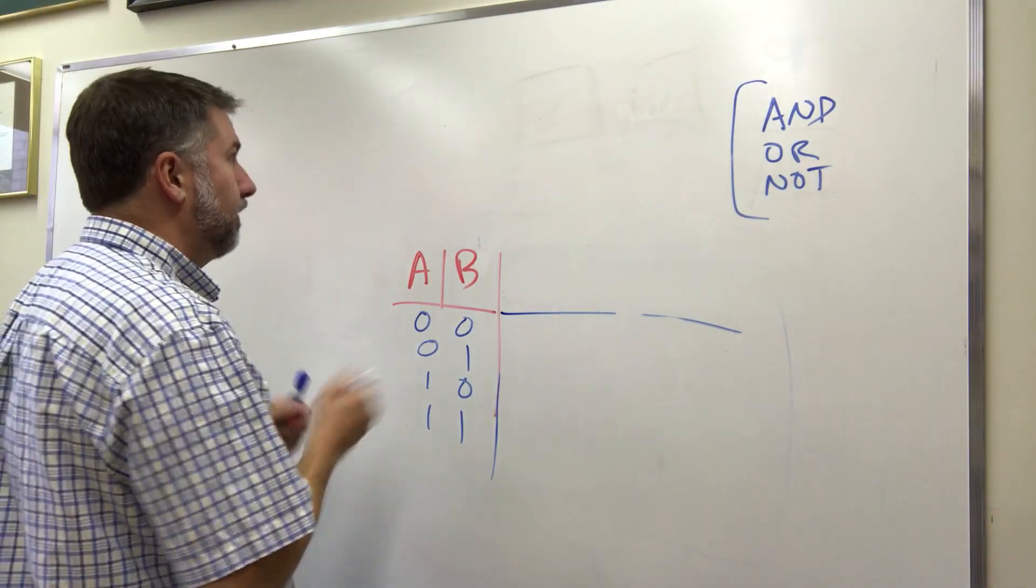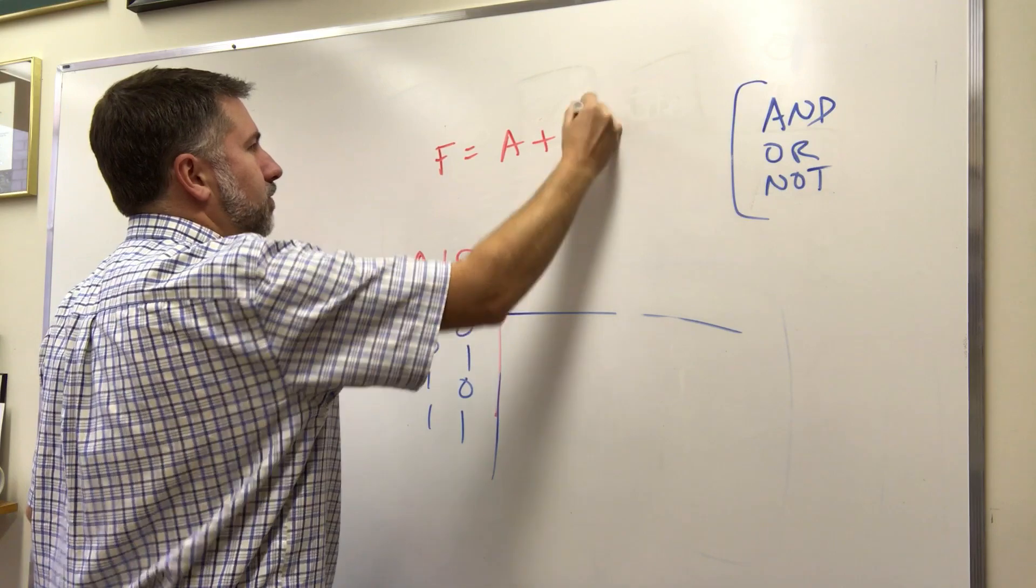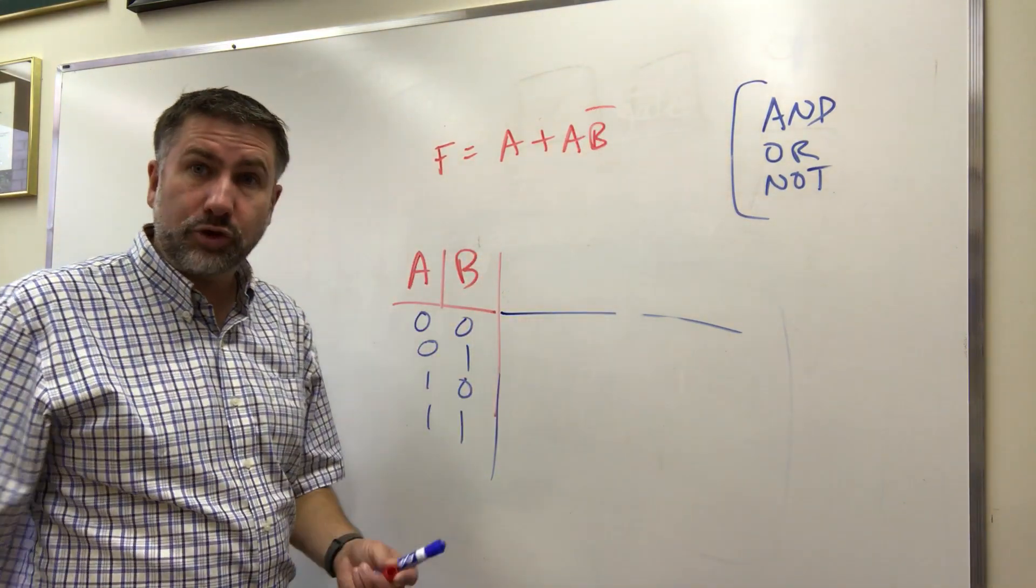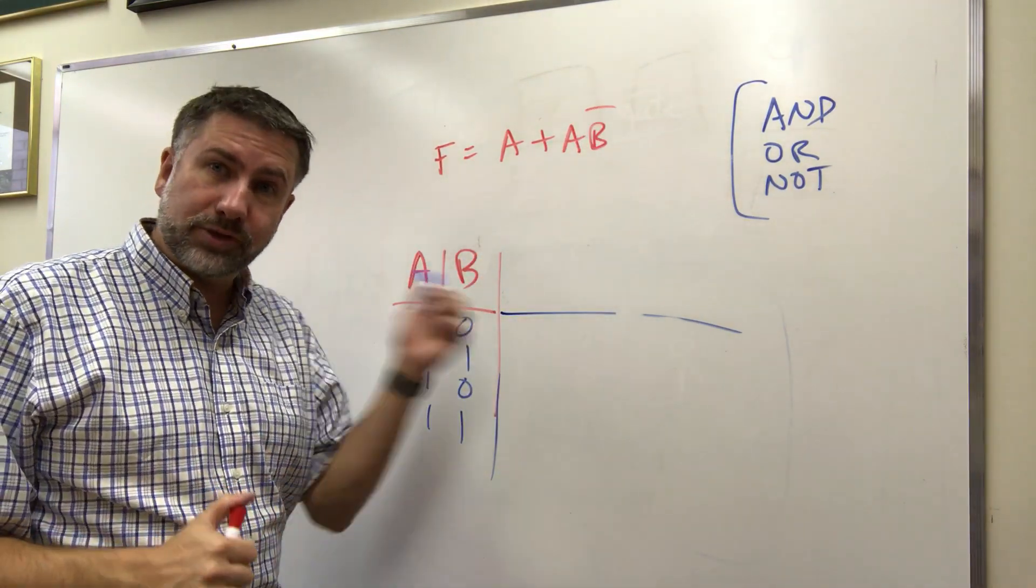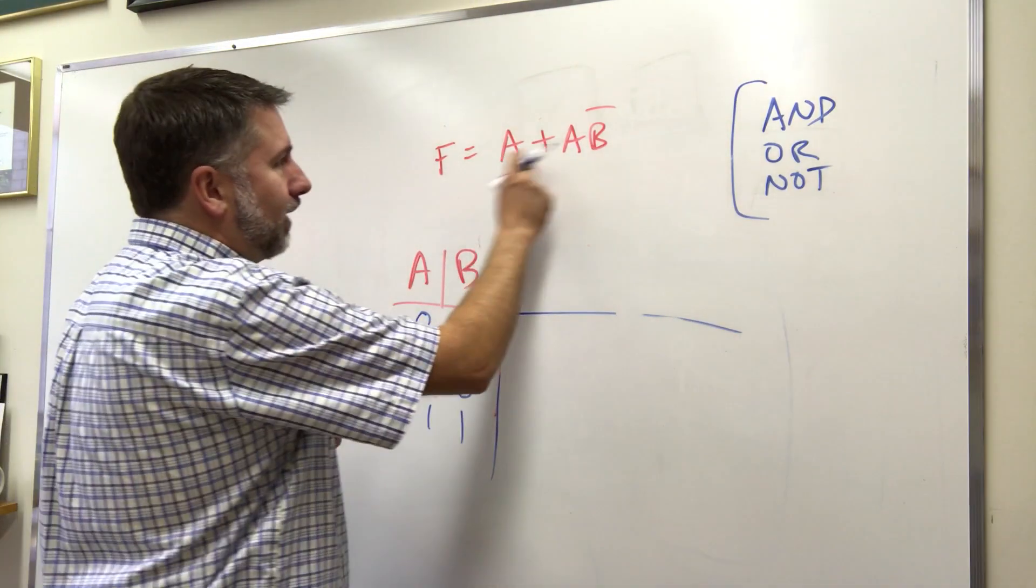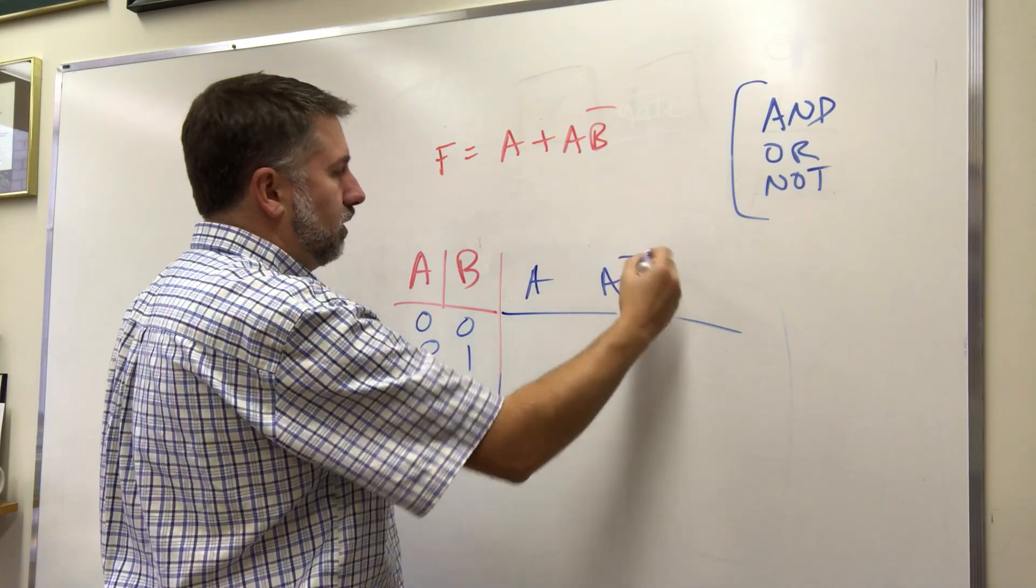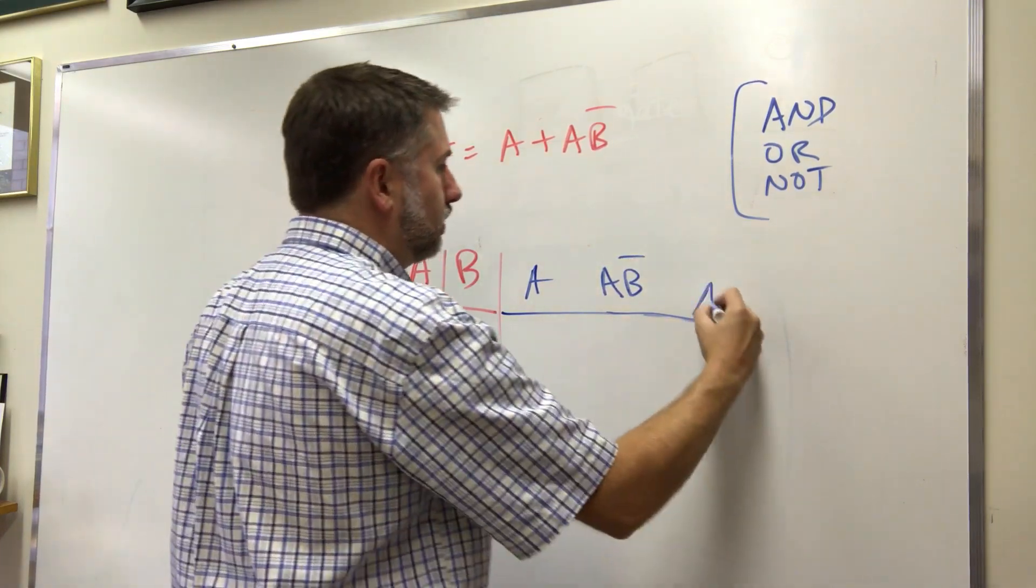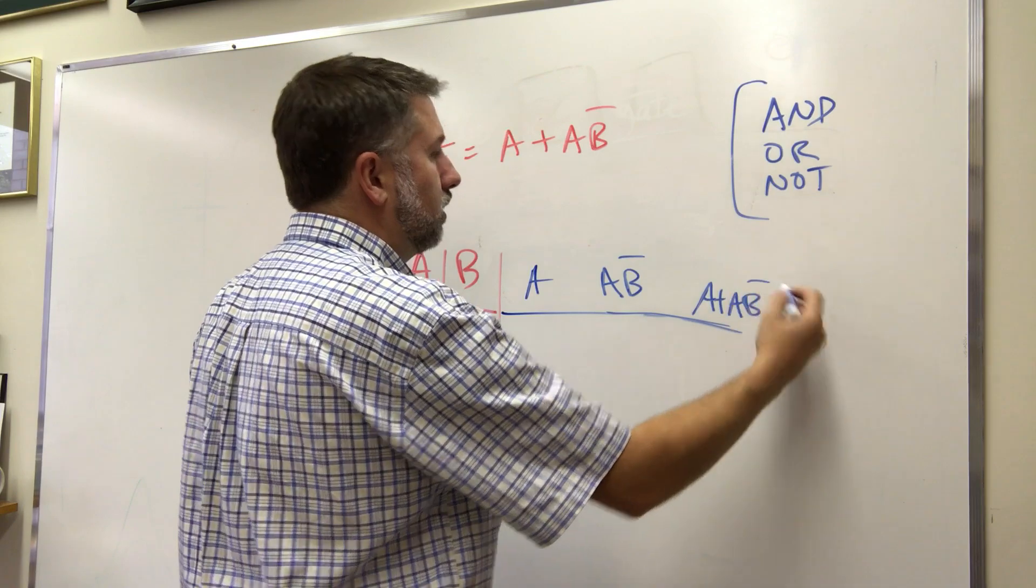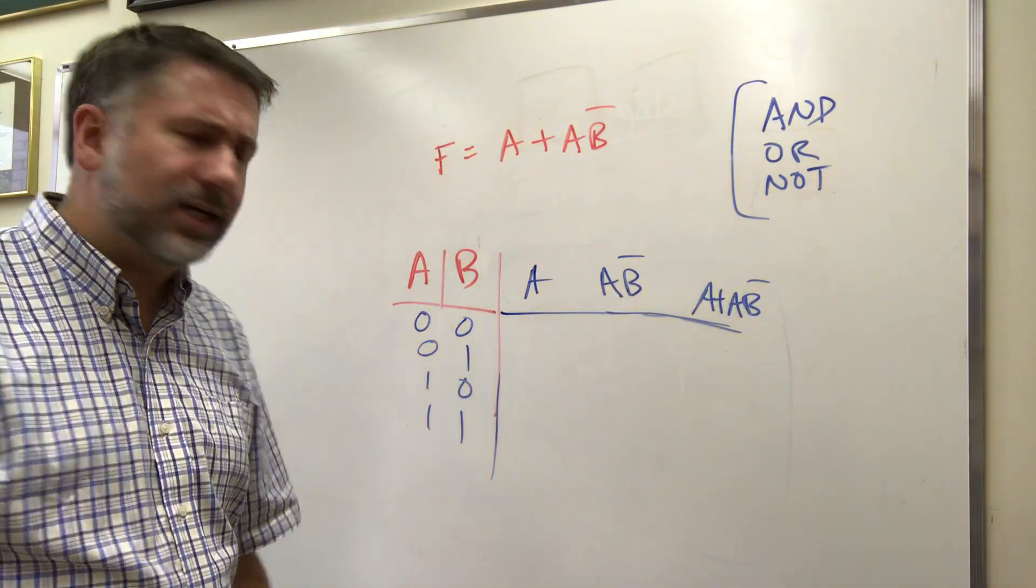Let's do F equals A or A B prime. Okay so this is a function of two variables A and B and here are the possible values of those variables. Again we'll look at each term individually and then we'll see what the completed function looks like, what each output is going to be and then see if we can recognize what that corresponds to.